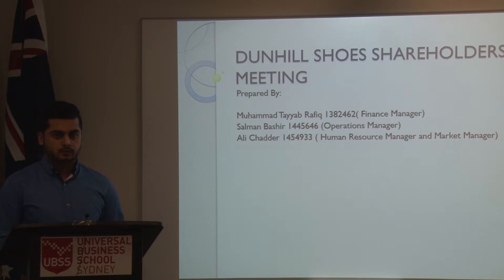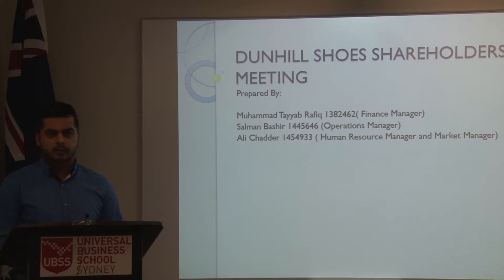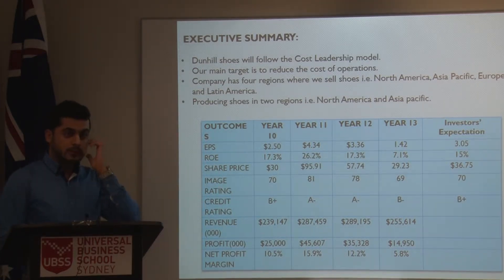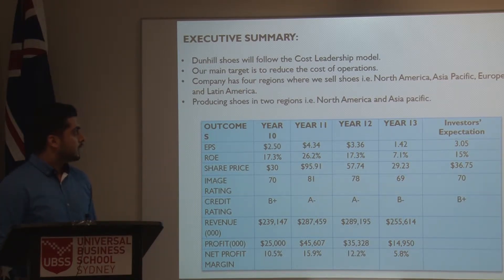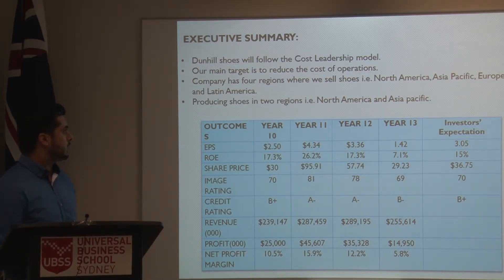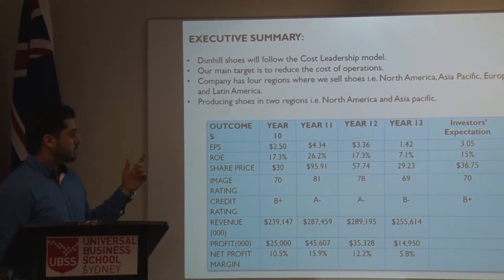I am the financial manager of Dunhill Shoes Company. First of all, I want to introduce my company. In year 10 when we started, our company's performance was very low. When we took over the company, we made some changes. We follow the cost leadership model — our main target is to reduce the cost of operation. The company has four regions where we sell shoes: North America, Asia Pacific, Europe, and Africa and Latin America. We just produce shoes in two regions: North America and Asia Pacific.